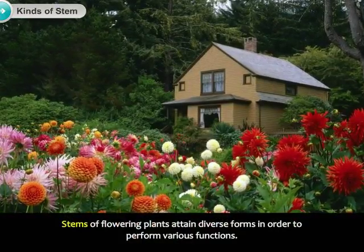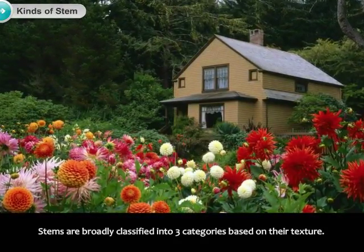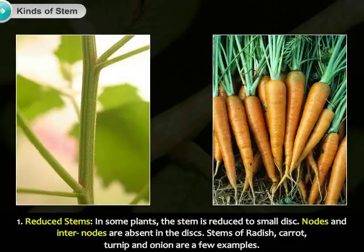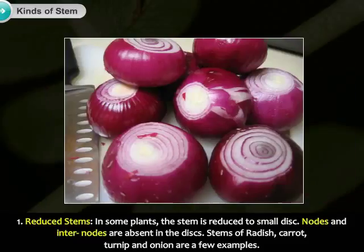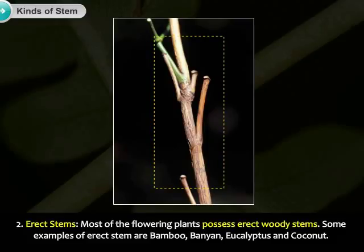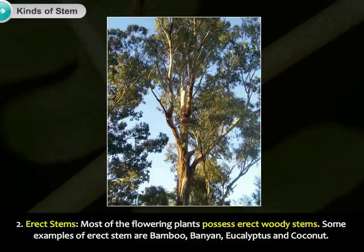Stems of flowering plants attain diverse forms in order to perform various functions. Stems are broadly classified into three categories based on their texture. 1. Reduced stems: In some plants, the stem is reduced to small discs. Nodes and internodes are absent in the discs. Stems of radish, carrot, turnip, and onion are a few examples. 2. Erect stems: Most flowering plants possess erect woody stems. Some examples of erect stems are bamboo, banyan, eucalyptus, and coconut.